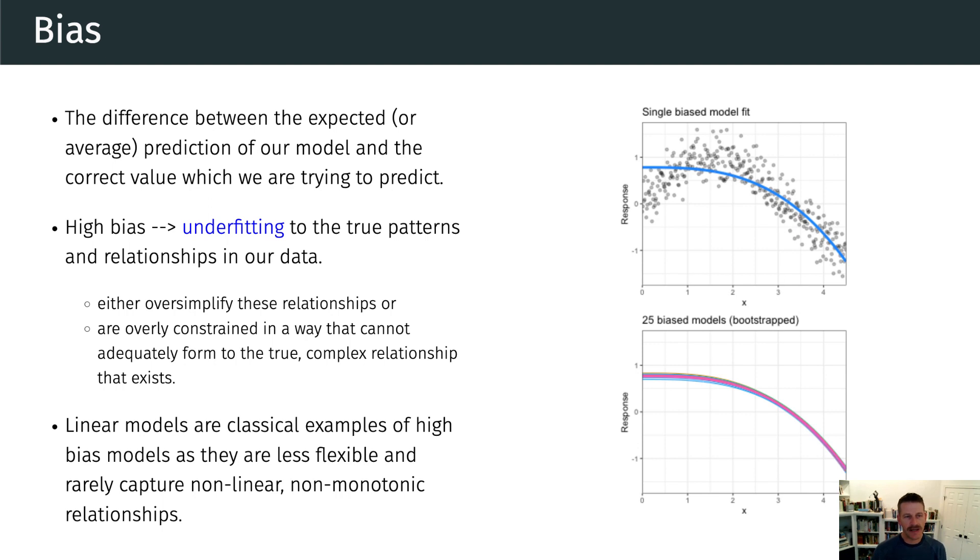All right, so to get into more details, the idea of bias is really the fact that bias is the difference between the expected or the average prediction of our model and the correct value which we are trying to predict. So really, it's measuring how far off, in general, our model's predictions are from the correct value. And so this kind of gives us an idea of how well a model can conform to the underlying structure of the data. So we can see in this image here, we can see that our predicted value, our regression line here, just is not flexible enough to conform to the underlying relationship of this data.